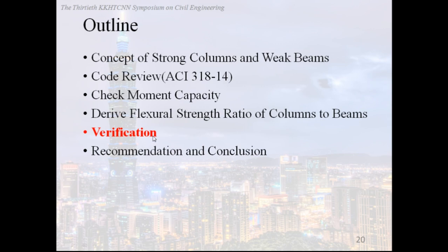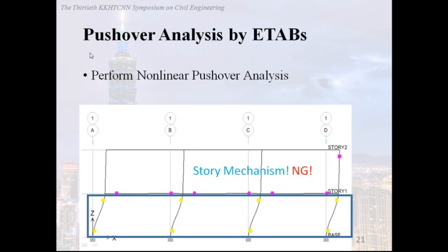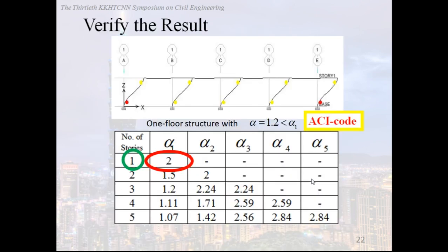Verification. Furthermore, we will use the software called ETABS to verify our derivation. Push-over analysis by ETABS. We perform a nonlinear push-over analysis, and here is an example of story mechanism showed in ETABS. So we verify the result. The figure is the one floor structure with alpha equal to 1.2, and this is the value of ACI code. And in ETABS, we found that the result is story mechanism at first floor. And from the table, we also get the same result because alpha is smaller than alpha 1. And that is the one floor structure, so the result is story mechanism. It is consistent with the ETABS.